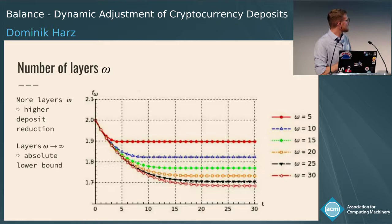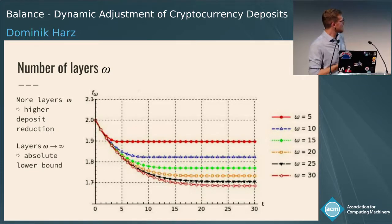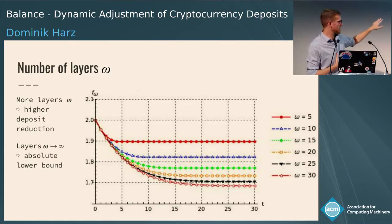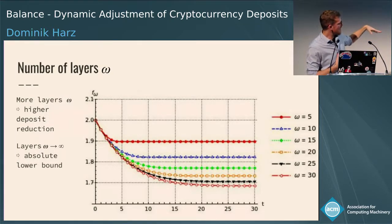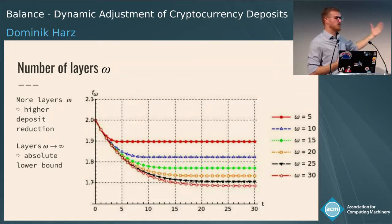The first graph shows how the number of layers affects collateral reduction. The top red line shows Balance configured with five layers — collateral can only be reduced from 200% to about 190%. With more layers (the lower red line and black line), we can reduce collateral much further to about 170%. Setting the number of layers toward infinity gives an absolute lower bound on the collateral reduction achievable.